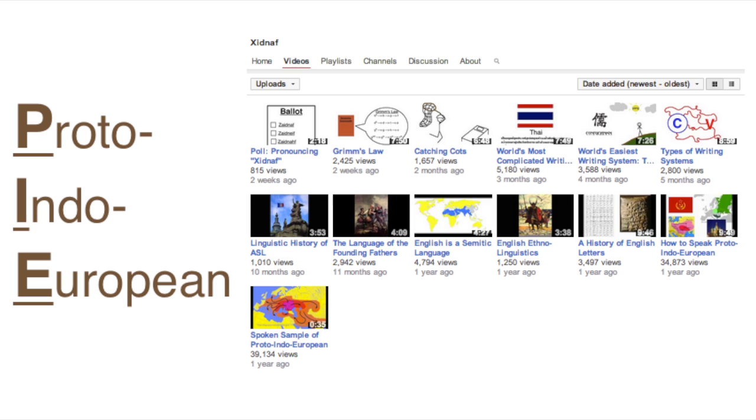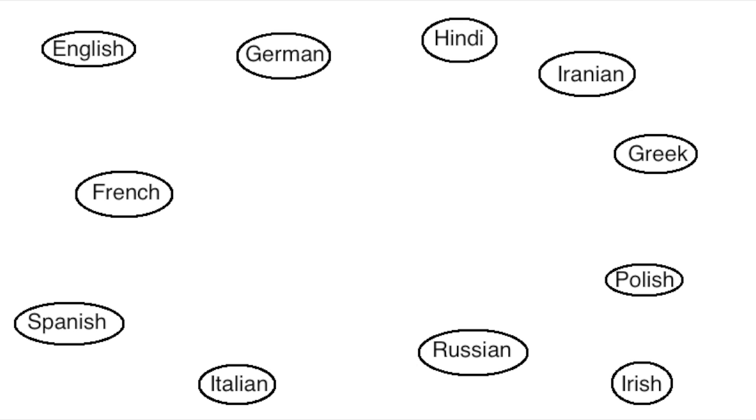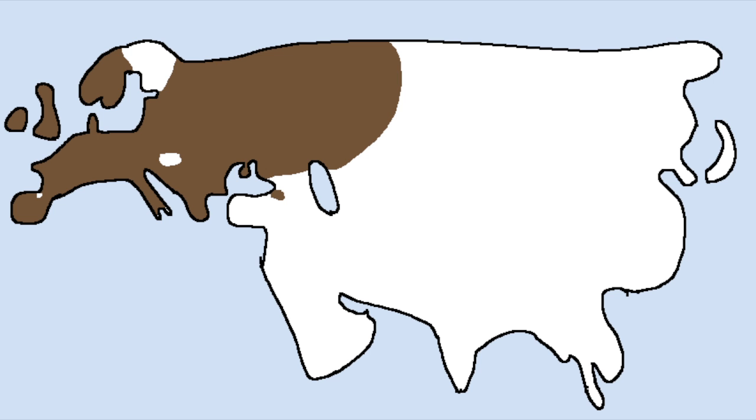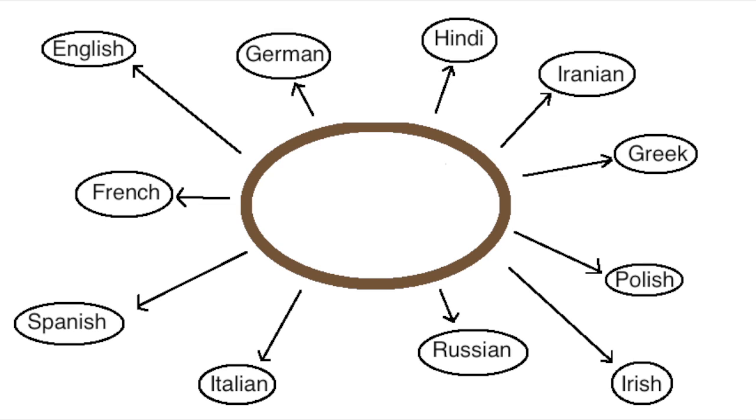Proto-Indo-European comes up a lot in my videos. My very first two videos were both about PIE, but in case you don't know, linguists believe that a huge group of the world's languages are all descended from one common ancestor. This group includes almost all of the languages of Europe and like a third of the languages of Asia, mostly around Iran and India, so the group of languages are collectively called the Indo-European languages, and the language that they're all descended from is called Proto-Indo-European.